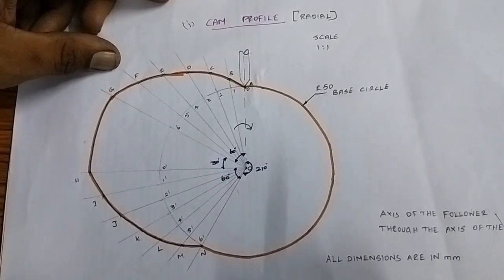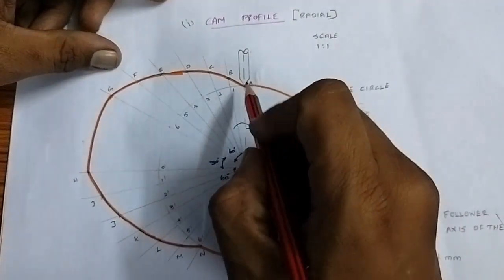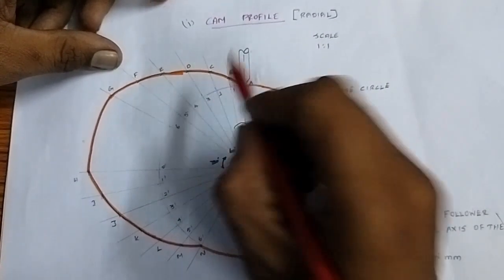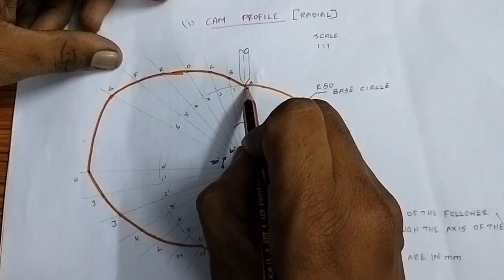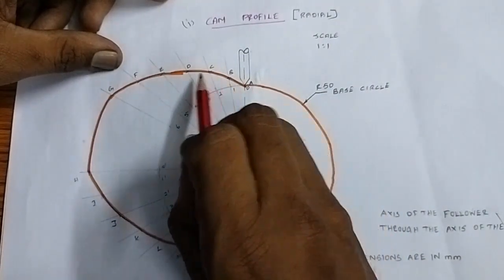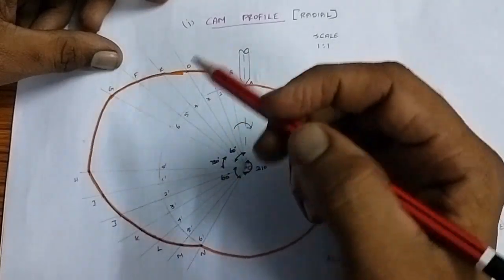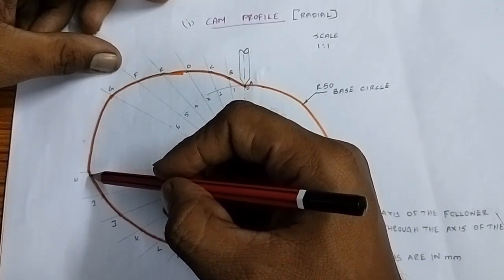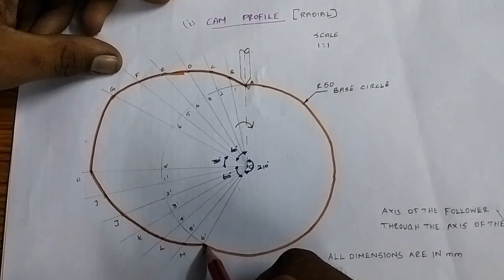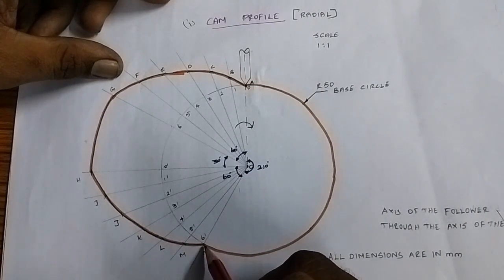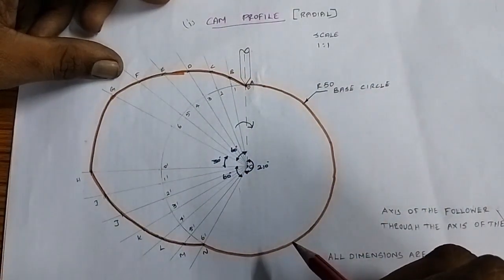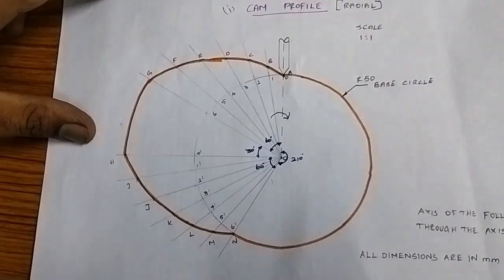Using the displacement diagram, draw the cam profile. Connect points A through G for the forward stroke, then the dwell arc, then the return stroke points. Join the points from A to B, C, D, E, F, G smoothly. The follower lowers during the return stroke. Connect N back to the initial point with a smooth curve. This is the final cam profile.